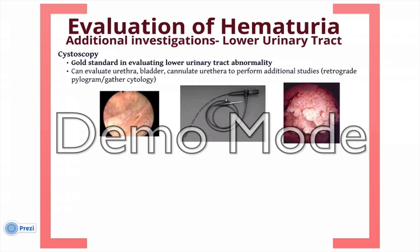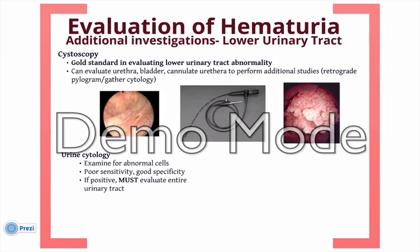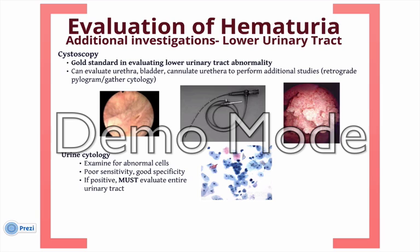Other investigations used selectively include a urine cytology, which is essentially an examination of the urine looking for any abnormal or dystrophic cells. Urine cytology is a poorly sensitive test and is generally not a good screening tool. However, if a urine cytology does come back positive, this is a very specific test — meaning if it shows abnormal cells, one must be very aware of the possibility of urologic malignancy and ensure that the entire urinary tract is evaluated thoroughly.